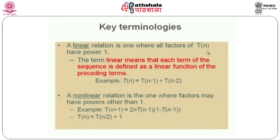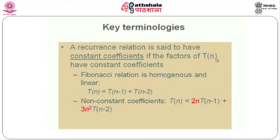We can also classify based on coefficients. If T(n) has all constant coefficients, then it is called a constant coefficient recurrence relation. For example, the recurrence relation T(n) = T(n-1) + T(n-2) is called both homogeneous as well as linear. Sometimes we may have non-constant coefficients also.